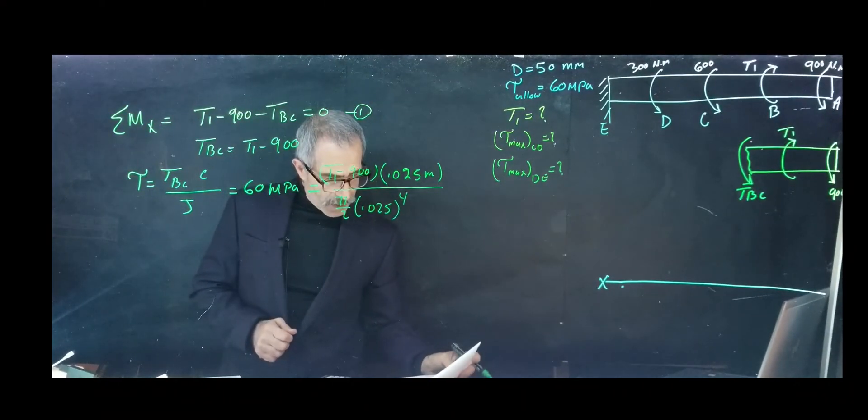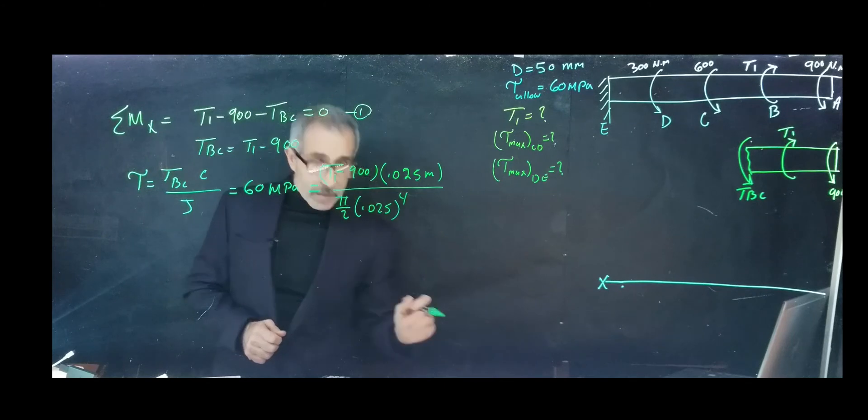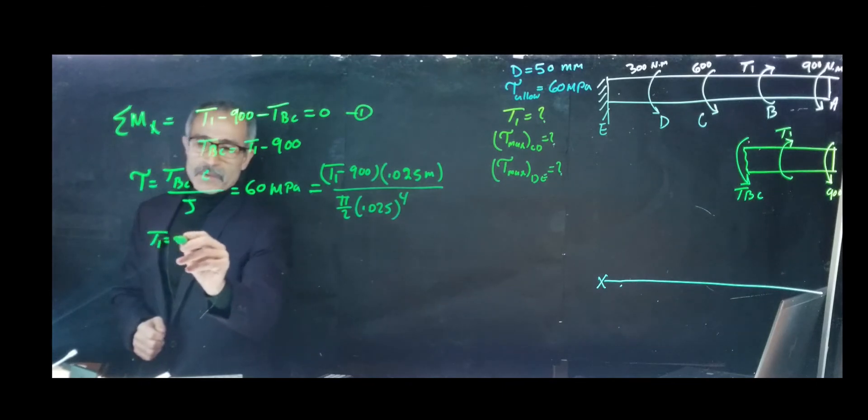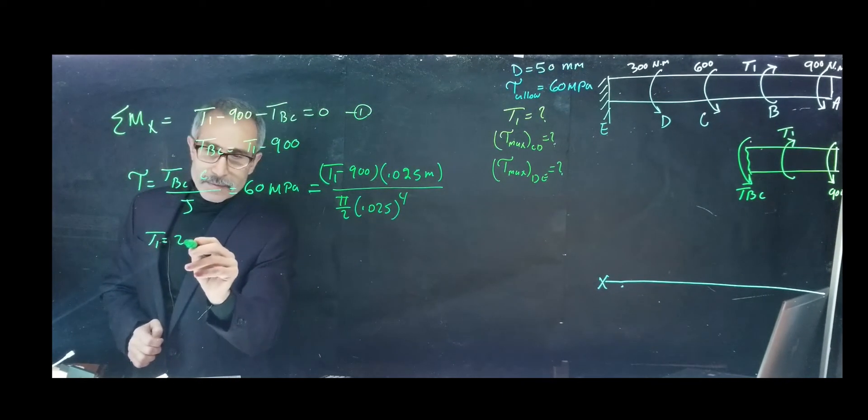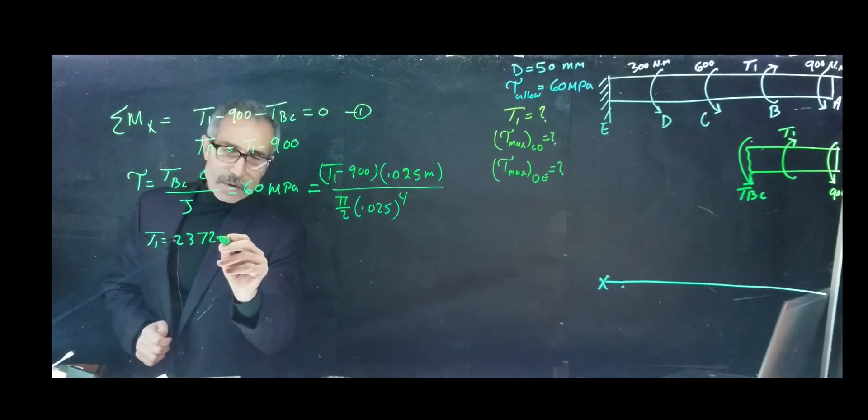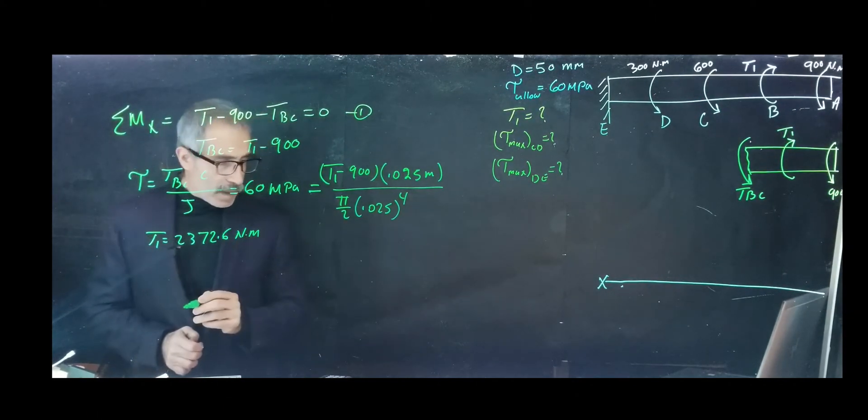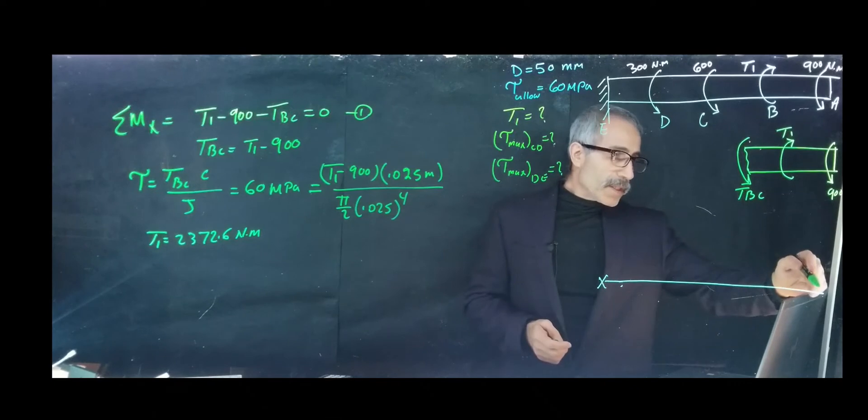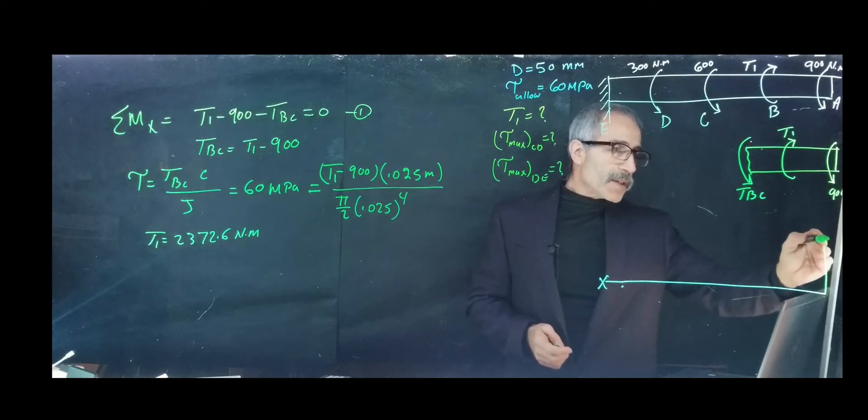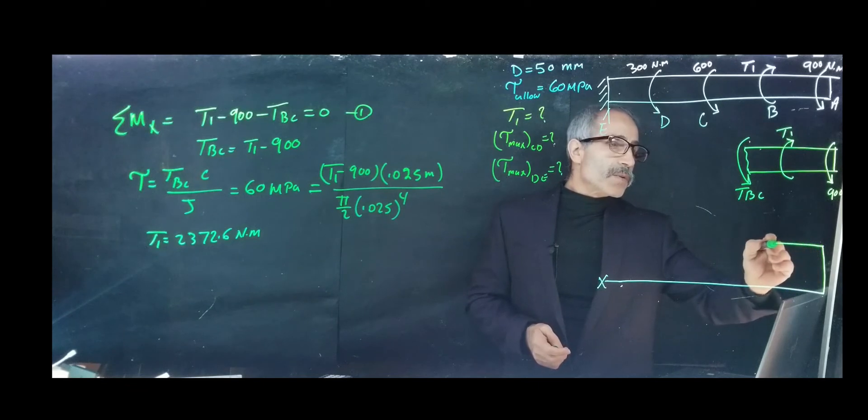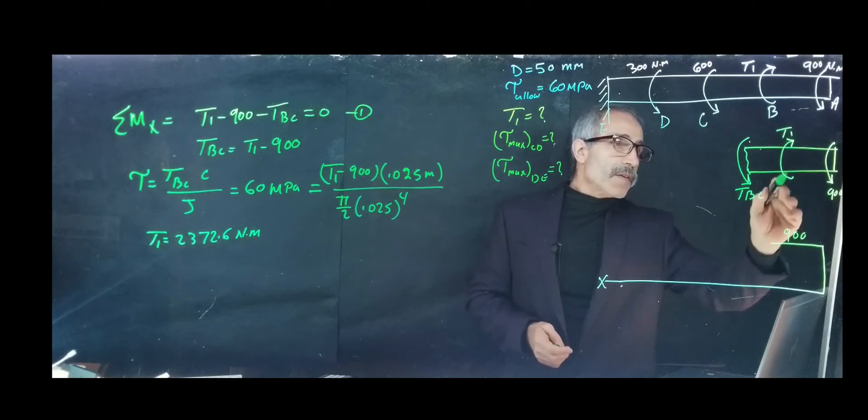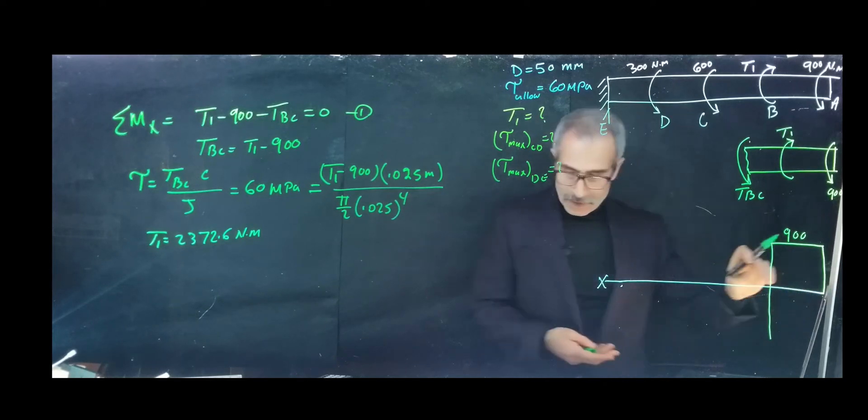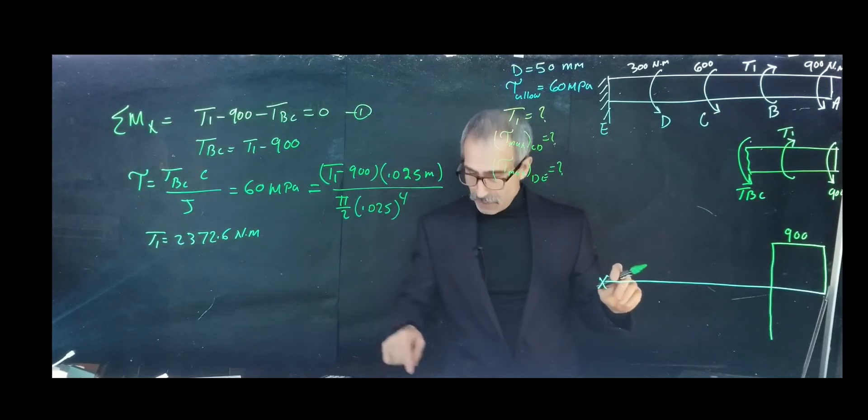I have calculated that T1 comes out to 2372.6 Newton meters. Let's plug this into our torque diagram. We start at 900, then from T1 we drop down to 2372, which brings us to 1472.